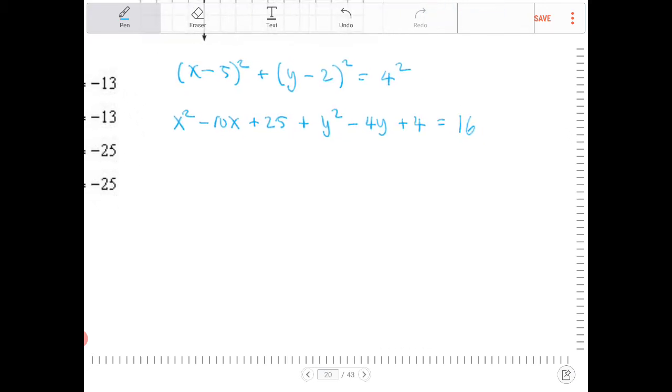I'm going to subtract both sides by 29, because 25 plus 4 gets me 29. And if I do, I'll end up with negative 13 on the right-hand side. The left-hand side, what I'm left with is x² - 10x + y² - 4y.